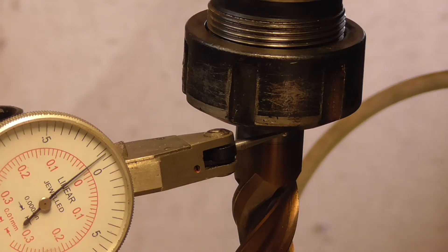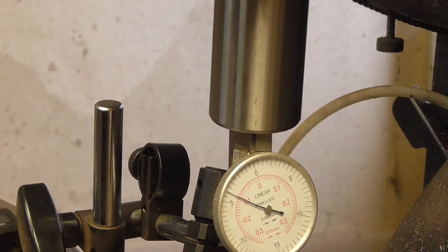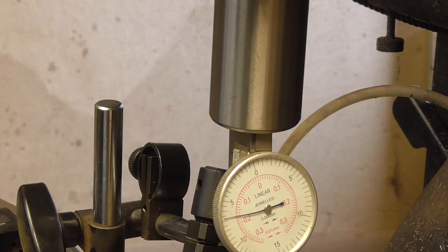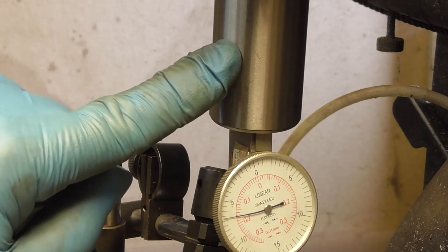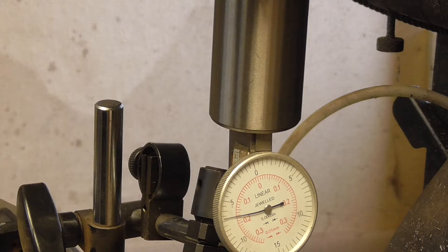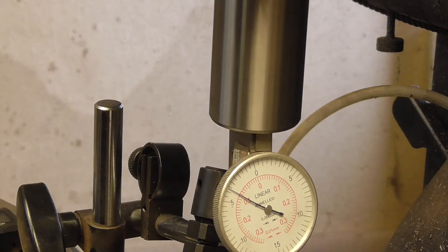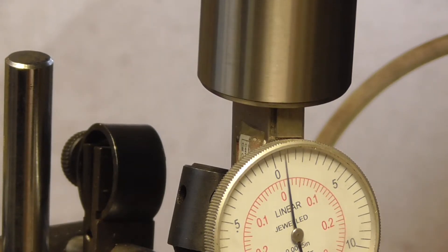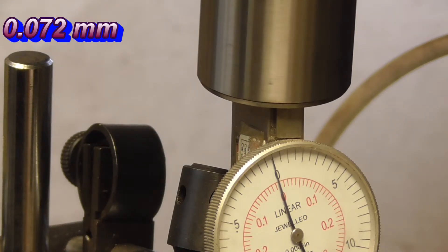So, let's test something else. R8 to Morse Taper 3. I've got it up there as far as I can at the moment. And let's see what we've got. Oh, I think I've come off the needle. That's 0.0567. 0.07. 0.075.